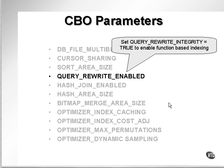Query rewrite enabled and query rewrite integrity are both required to be set to enable function-based indexing. Function-based indexing allows you to place functions into SQL statements, such as in where clause filtering statements or parts of select statements, allowing access to indexes containing the results of a function. In other words, a query with a where clause containing a function can actually use an index.